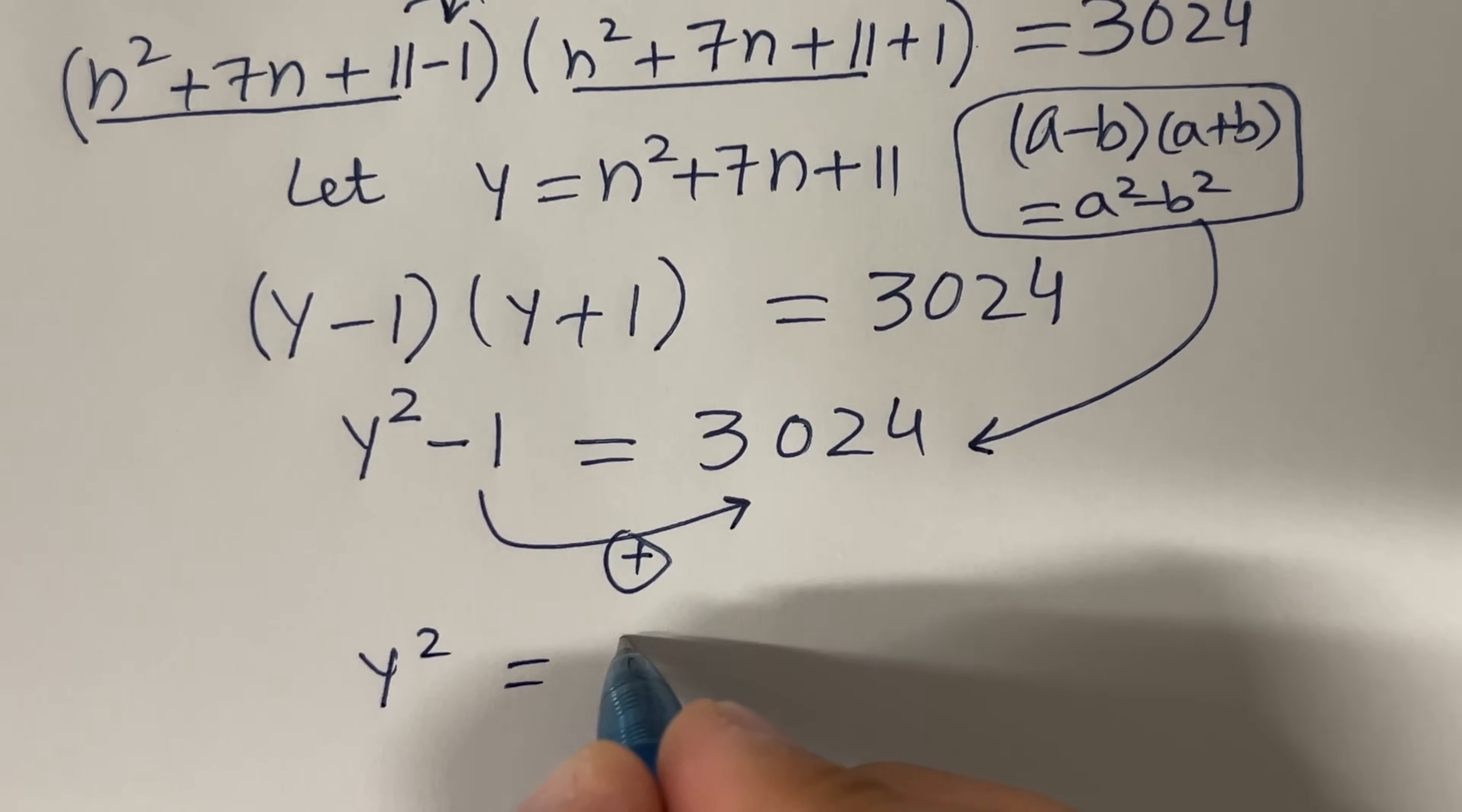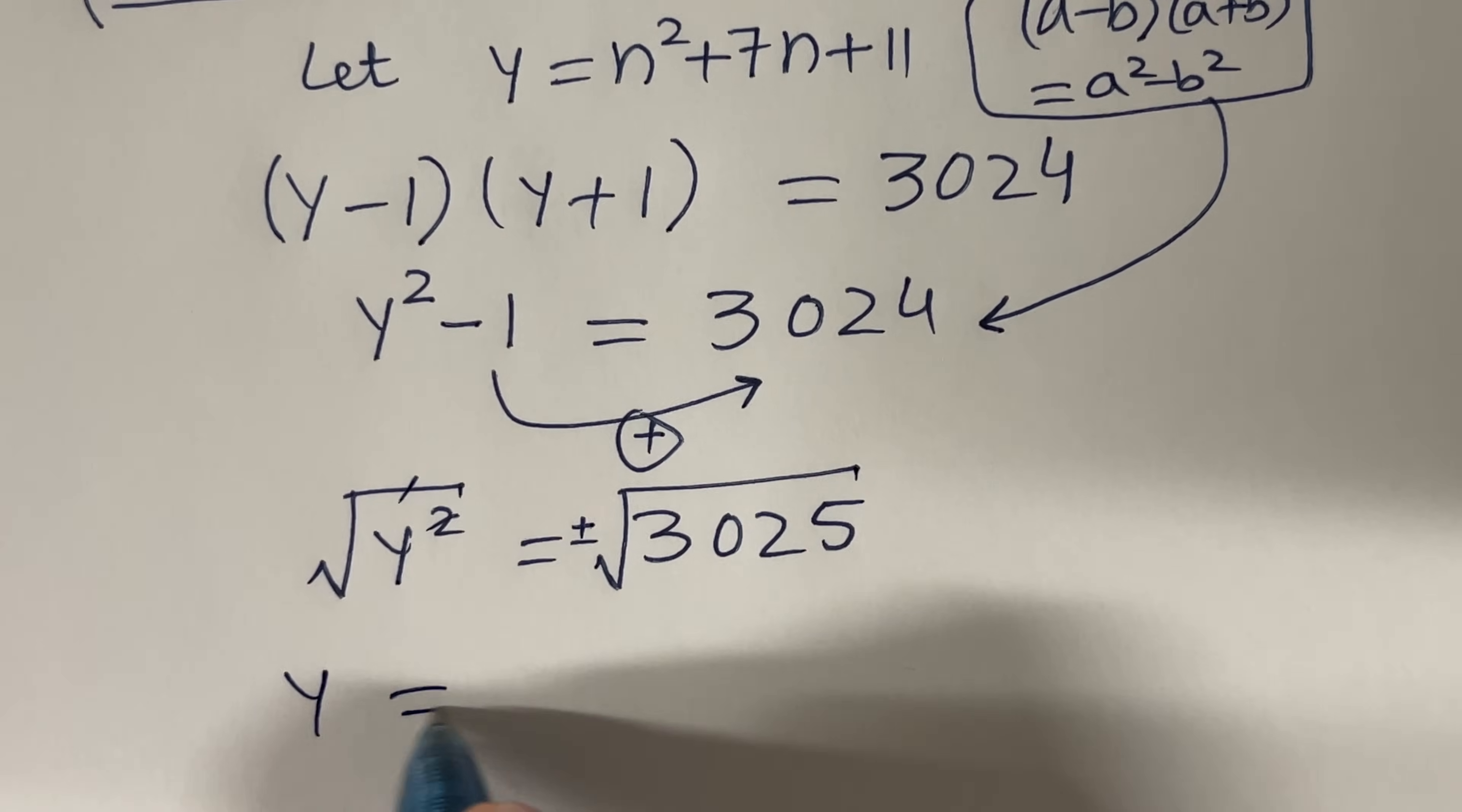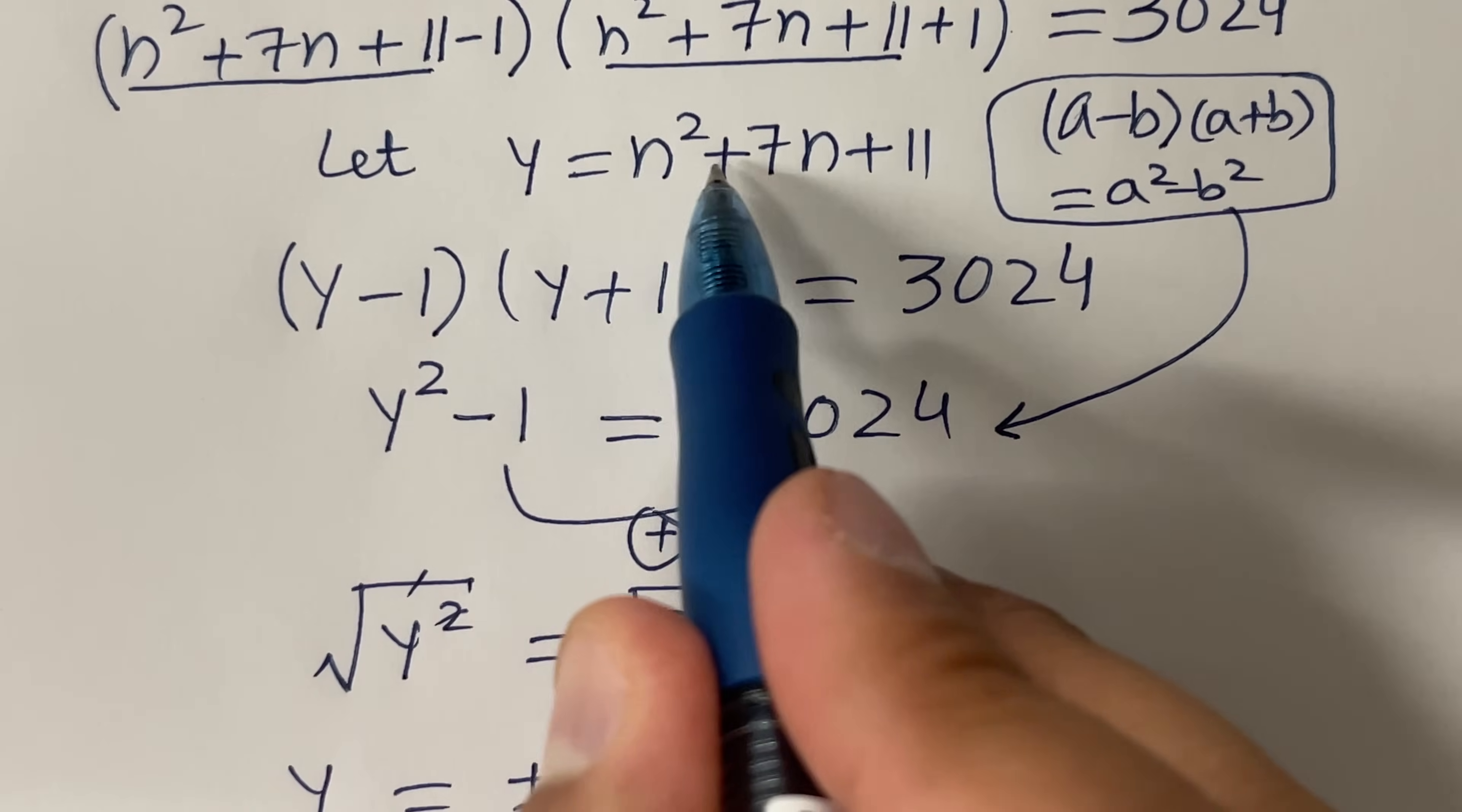I can move this 1 to the other side, so we will have y² = 3025 if you add 1 on both sides. But we need the value of y. Therefore, we can take square roots on both sides, but then we will have two answers: y = ± √3025 = 55. But remember, y was equal to this guy.